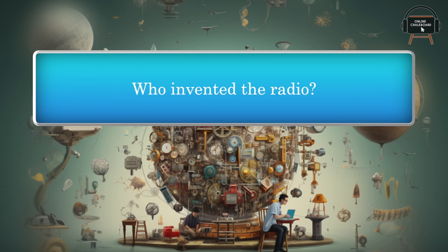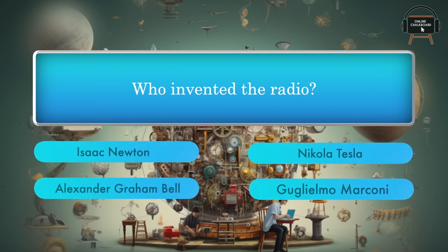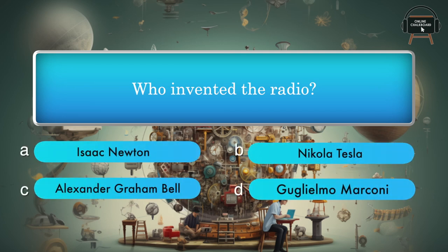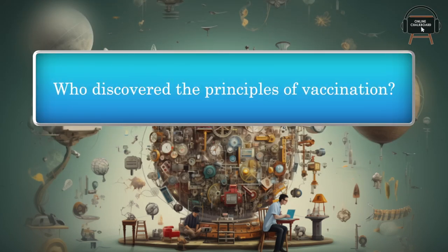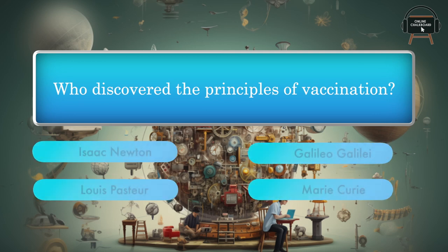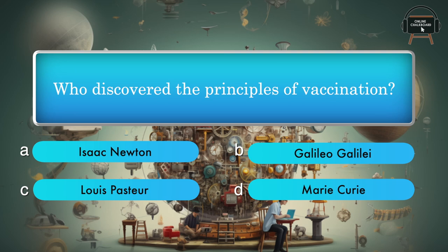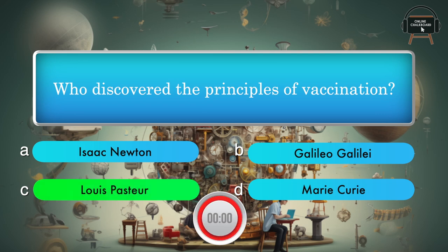Who invented the radio? Isaac Newton, Nikola Tesla, Alexander Graham Bell, Guglielmo Marconi. Answer: Guglielmo Marconi. Who discovered the principles of vaccination? Isaac Newton, Galileo Galilei, Louis Pasteur, Marie Curie. Answer: Louis Pasteur.